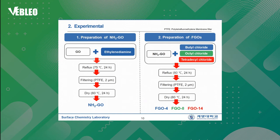The second step is the alkylation of aminized graphene oxide. Aminized graphene oxide is mixed with six kinds of alkyl chlorides, which are butyl chloride, octyl chloride, tetradecyl chloride, etc. These mixtures are refluxed at 80 degrees for 24 hours and filtered by PTFE with 2 micron pore size, then dried at 60 degrees for 24 hours. Finally, we obtained FCO4, FCO6, FCO8, FCO10, FCO12, and FCO14 as products.